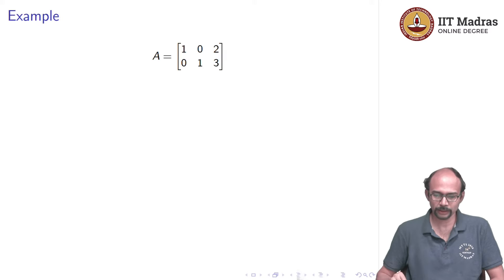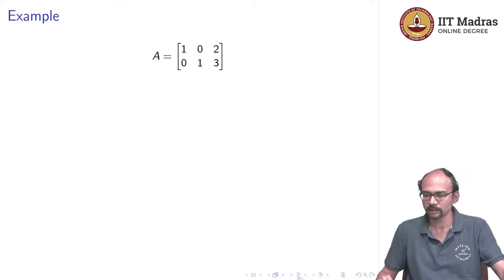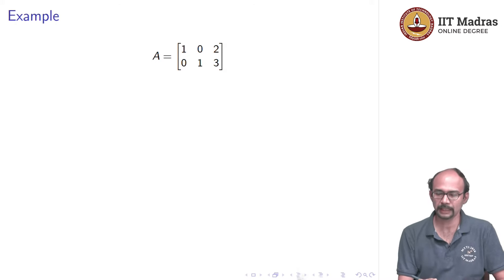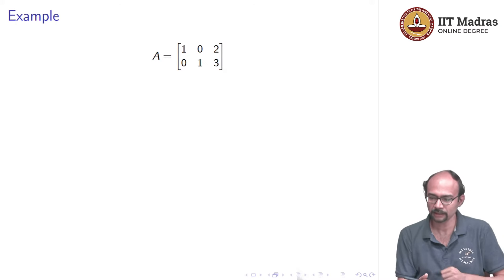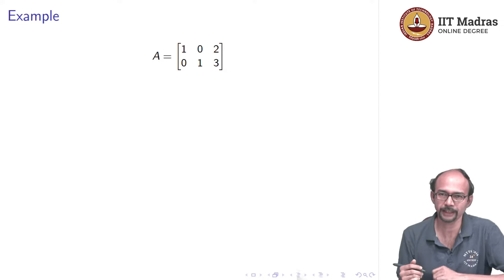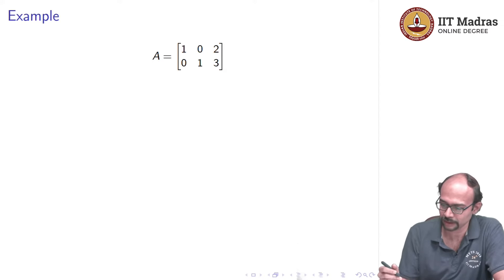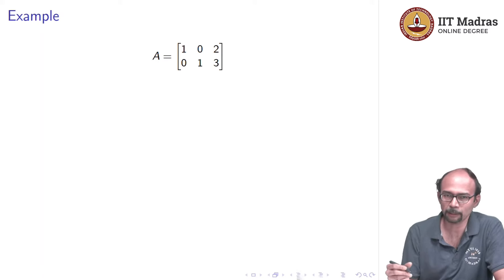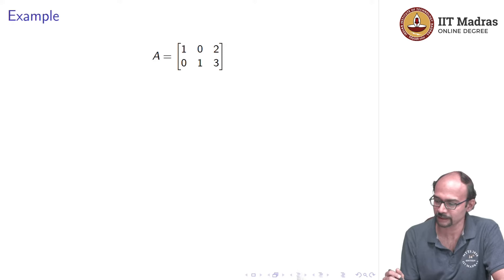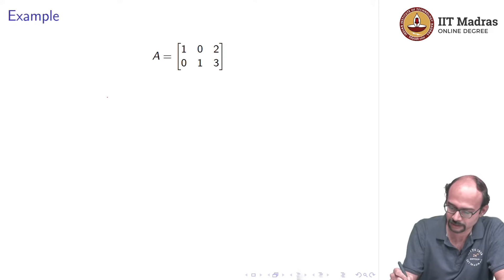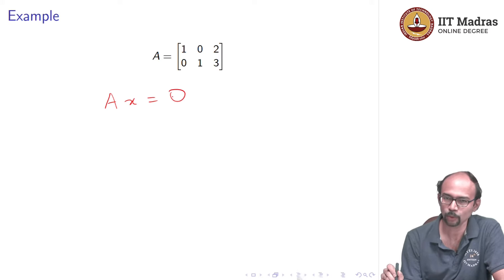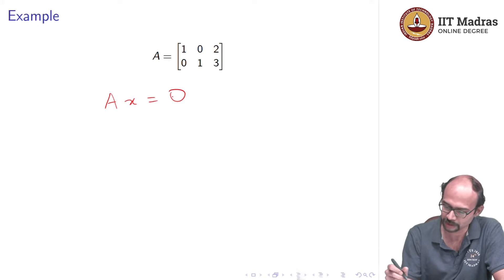Let us look at an example. We have A as the matrix with first row 1, 0, 2 and second row 0, 1, 3. Let us take the equation Ax = 0. This is called a homogeneous system, which we will study later.